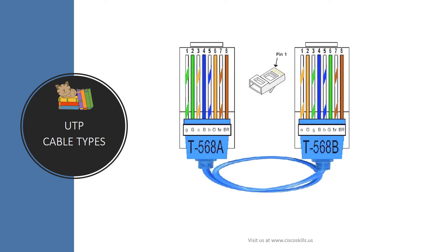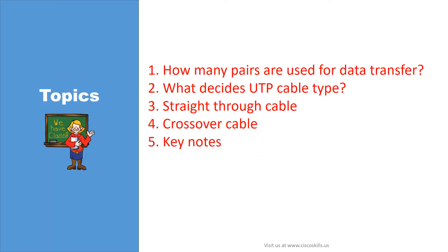Today, we will learn about different types of UTP cable that we can use to connect network devices together. In this lesson, we will cover the following topics: first, we will answer two important questions — how many pairs are used for data transfer, and what decides UTP cable types? Then, we will go into detail about straight-through cable and crossover cable. Finally, we will sum up our lesson with the keynotes.